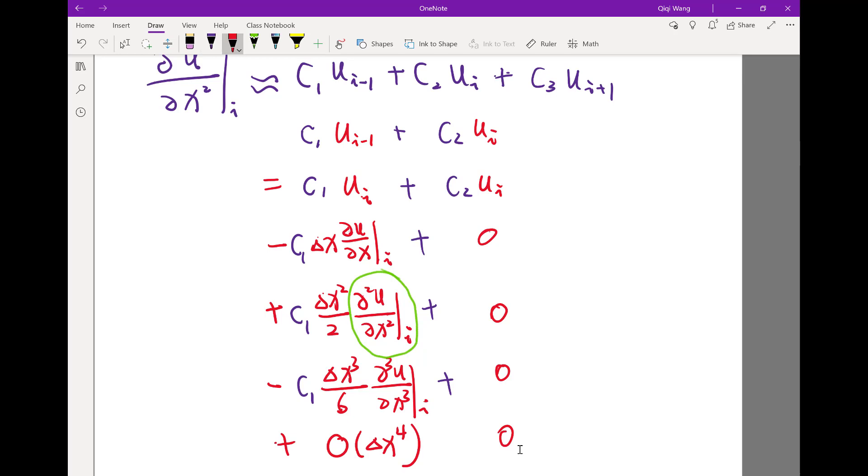UI plus one is going to be equal to UI plus delta x times the first derivative, plus delta x squared over 2 times the second order derivative, plus delta x cubed over 6 times the third order derivative, plus another O delta x to the fourth.